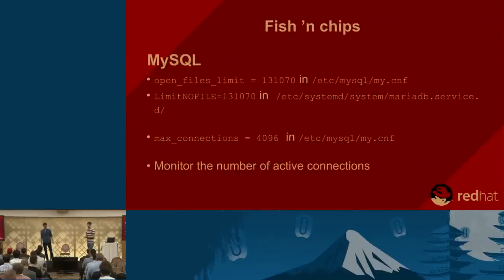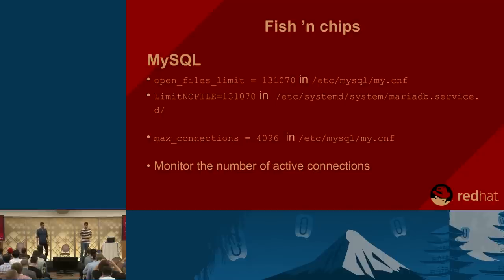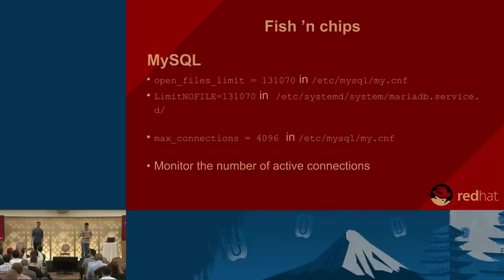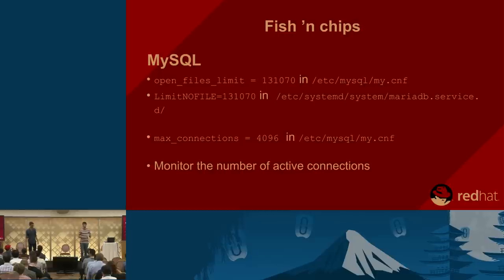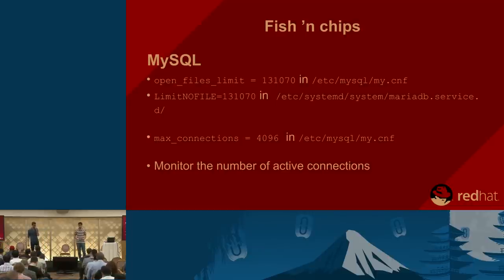MySQL is also critical when deploying OpenStack. Similar to load balancer alignment, the two parameters to pay attention to are OpenFiles limit and MaxConnections. When changing a parameter in MySQL configuration, sometimes updating the config file is not enough — you also need to update the systemd unit used to start the MySQL service. Depending on your distribution and setup, push any configuration updates across all servers involved in the startup process.